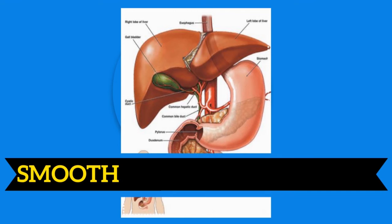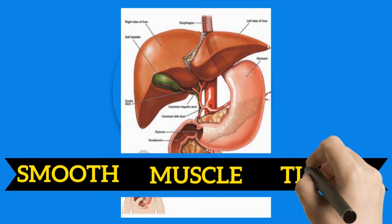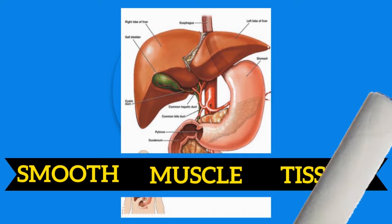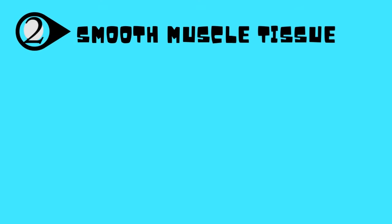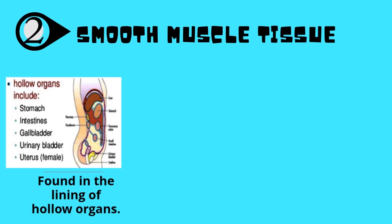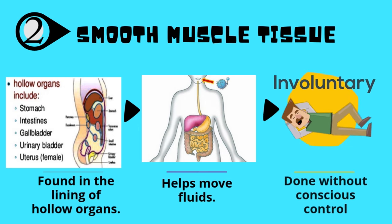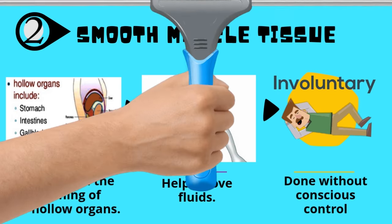The second type of muscle tissue is smooth muscle tissue. Smooth muscle tissue is found in the lining of hollow organs. It helps move fluid, and it is also involuntary, which means you have no control over it.